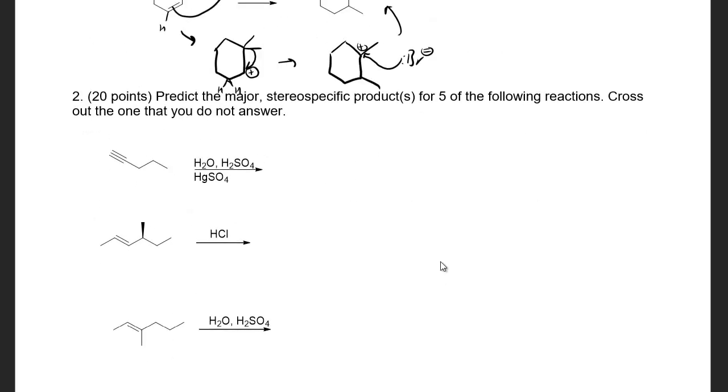For the next question, we're asked to draw the major stereospecific products for five of the following reactions, cross out the one you don't answer. I'll go ahead and answer all of them. So for this, we're going to stop at our enol, so specifically on this carbon here we're going to add an alcohol. For this reaction, the intermediate is an alkyne with an alcohol functional group.